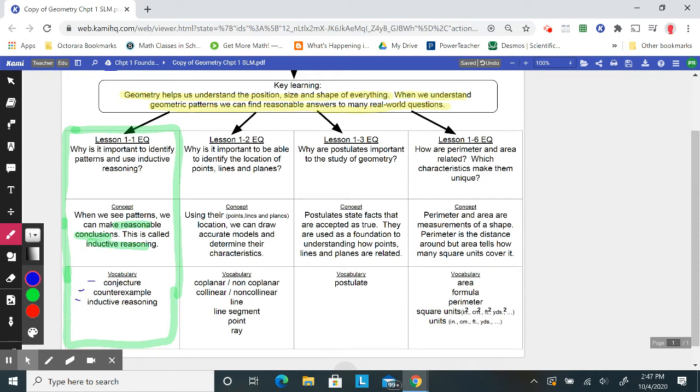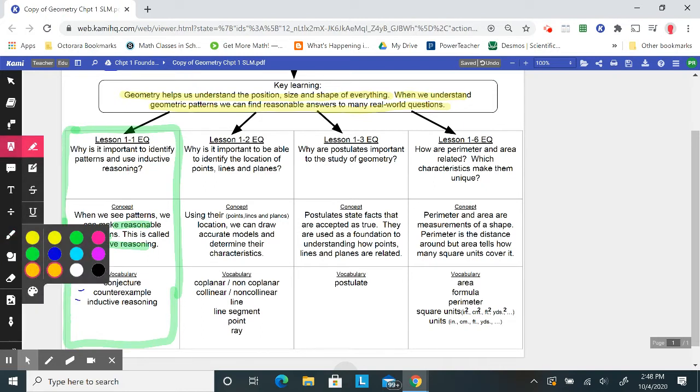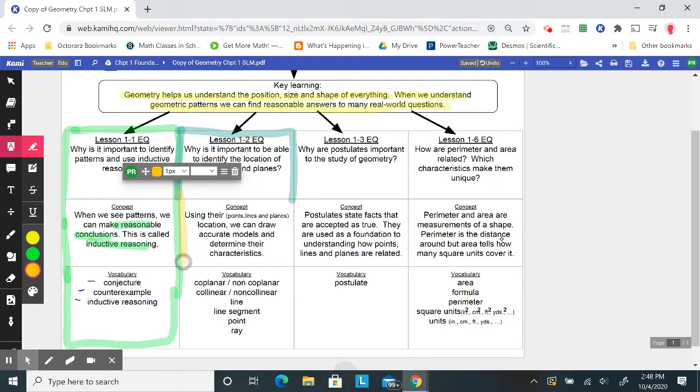Then in lesson 1.2, which we spent several days on, we covered why it's important to identify the location of points, lines, and planes. The concept is using their location, we can draw accurate models and determine their characteristics. Lots of vocabulary in this lesson: coplanar, non-coplanar, collinear, non-collinear, line segment, point, and ray.